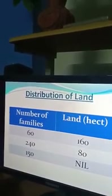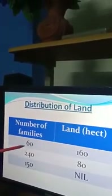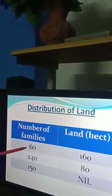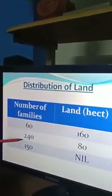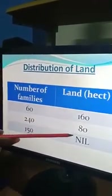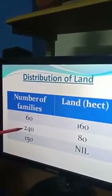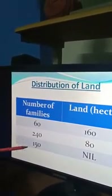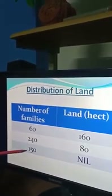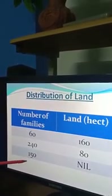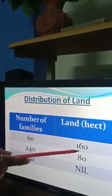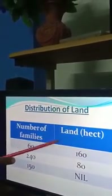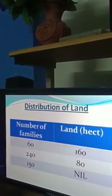In tabular form: 60 medium and large farming families — actually called landlords — hold 160 hectares of land. The 240 small farmer families hold only 80 hectares, with each farm less than two hectares in size. The 150 landless families, though engaged in farming activity, work in the small farmers' and medium and large farmers' land as land laborers. They do not have any plot of land.